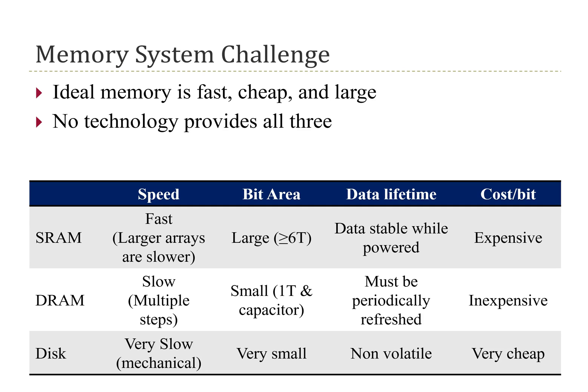An SRAM is very fast and could achieve the speed that would be desired, but storing information in SRAM consumes a fairly large amount of area and space, and it is fairly expensive to store a bit compared to some other technologies. Another technology, DRAM or Dynamic RAM, is more dense than SRAM but is also slower — not quite fast enough to keep pace with the processor.